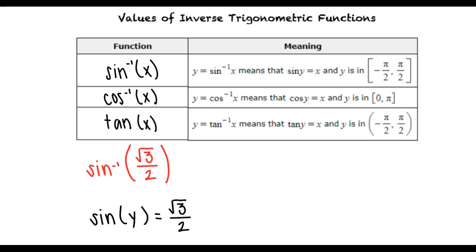Using our understanding of special angles, we know that sine of pi thirds equals square root 3 over 2. So our answer is pi thirds.